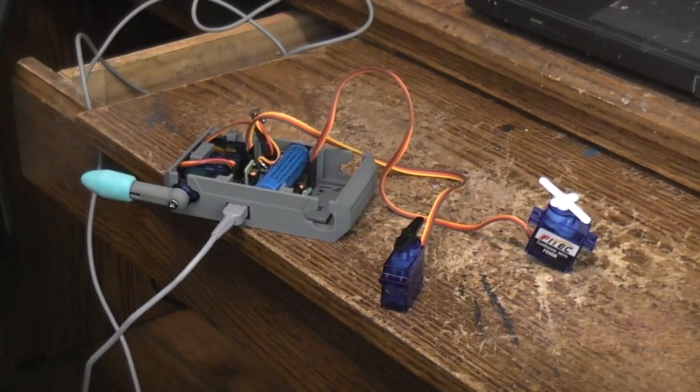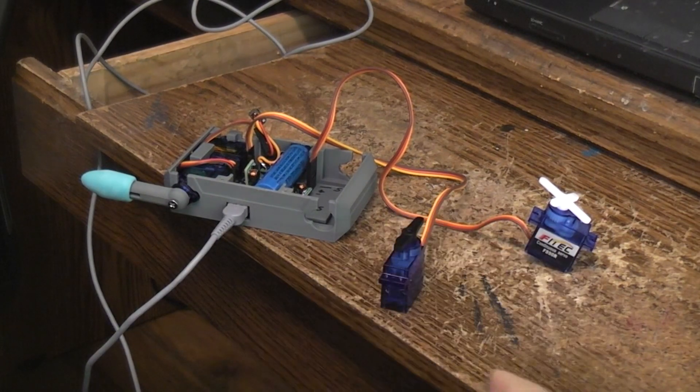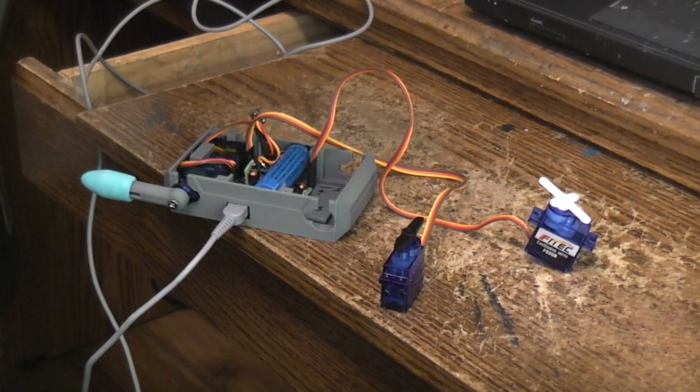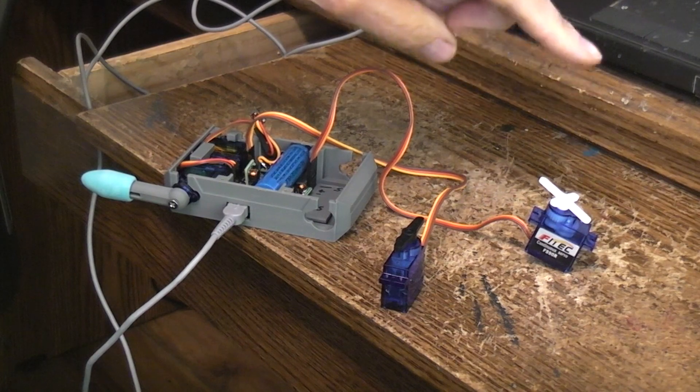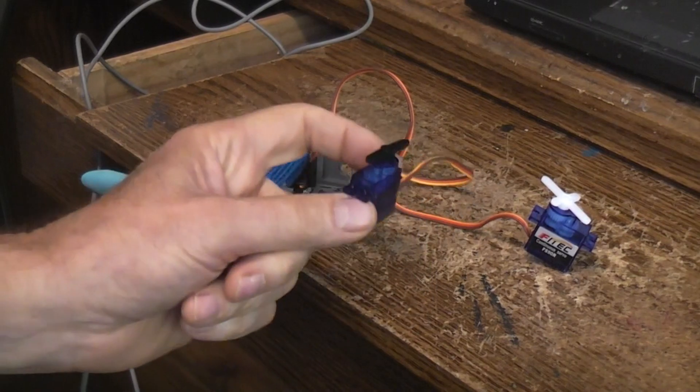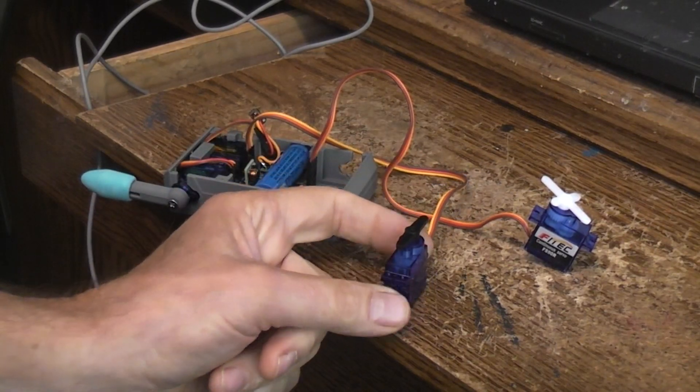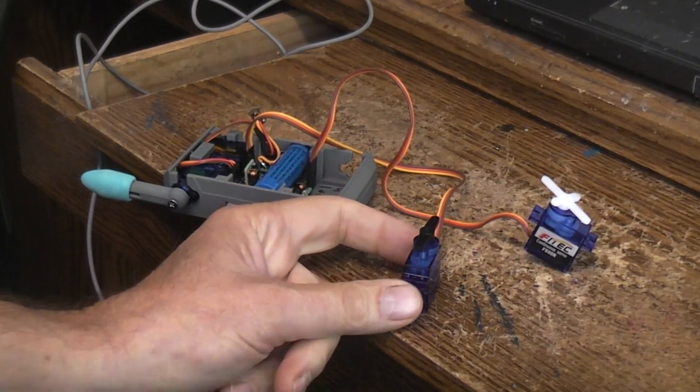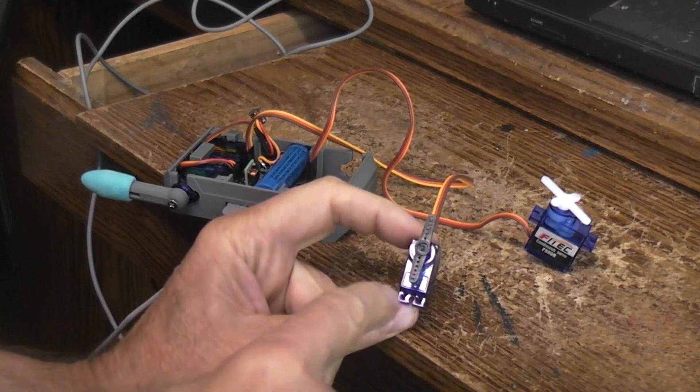These all fall within that category, but the differences are this servo, which is one of them, this servo right here is your standard 9G servo, meaning that it has a maximum of 180 degree turn.